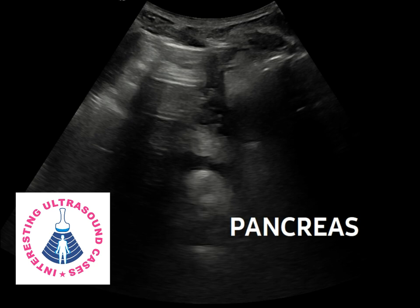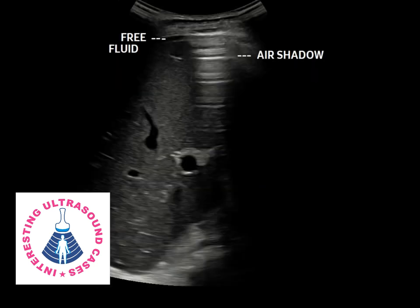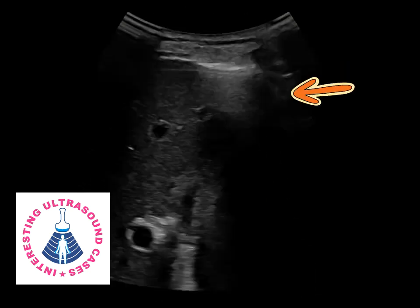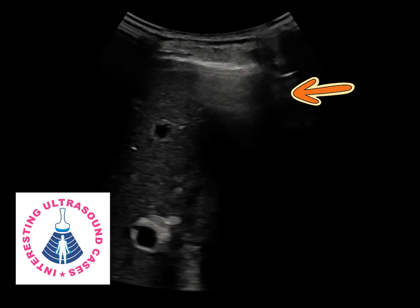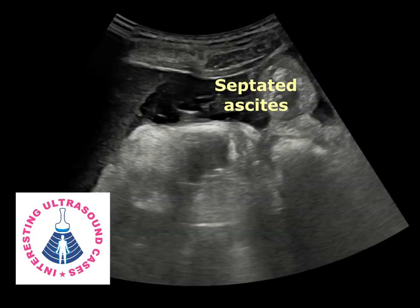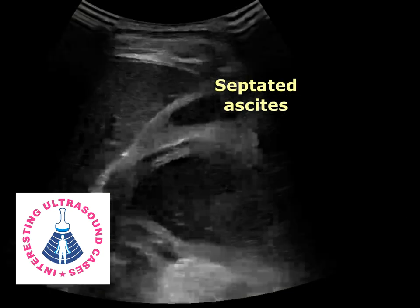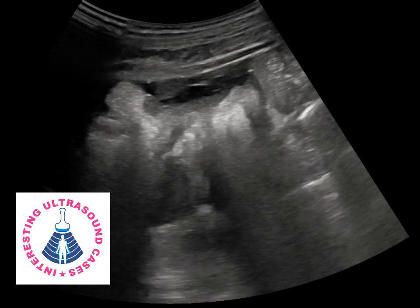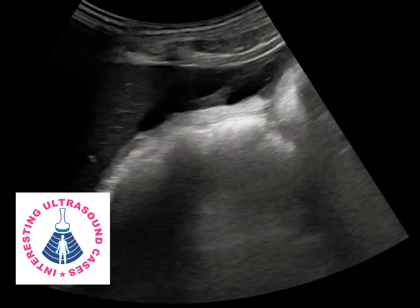On ultrasound examination, the pancreas was normal. There was air anterior to the liver capsule casting a shadow over the liver surface, which is suggestive of pneumoperitoneum. There was also septated ascites and diffuse omental thickening. The presence of pneumoperitoneum and ascites suggests perforated peritonitis.